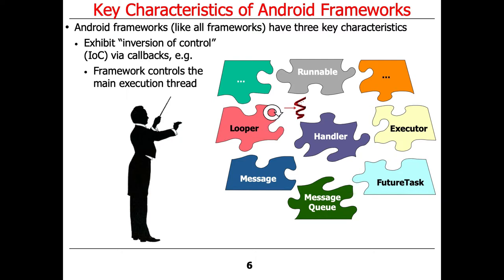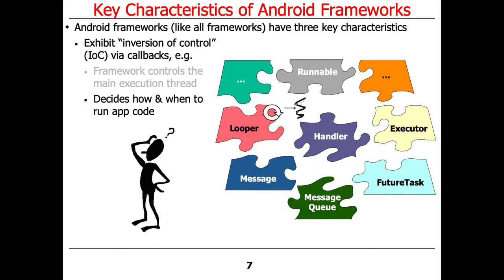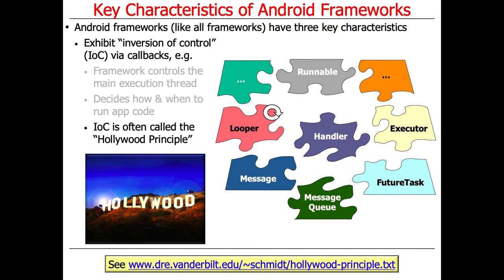With an inversion of control model, the framework controls the execution thread — the main execution thread — and the framework decides when and how to run app code. It's the framework making the decision about when the application code will run, as opposed to being self-directed. Inversion of control is sometimes humorously referred to as the Hollywood principle.